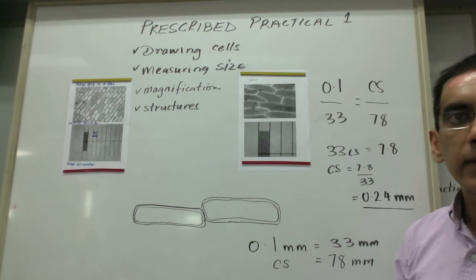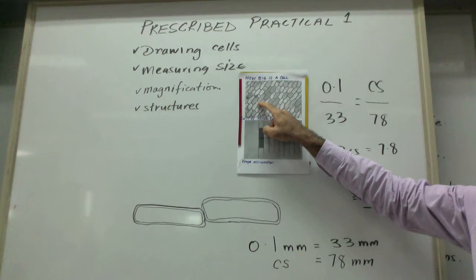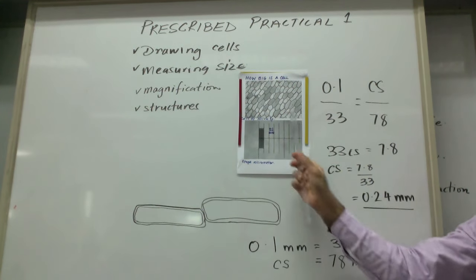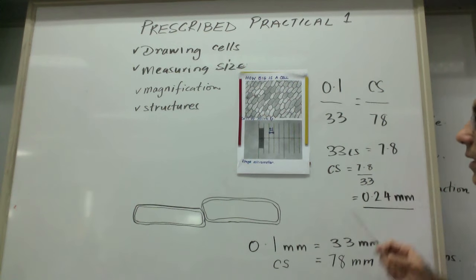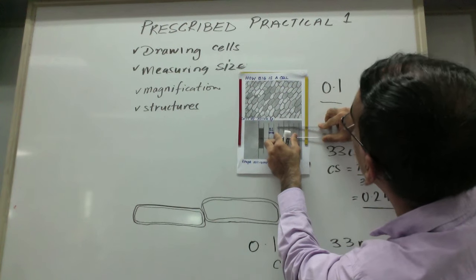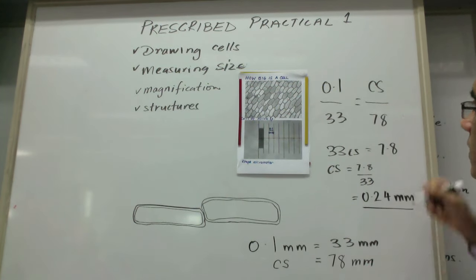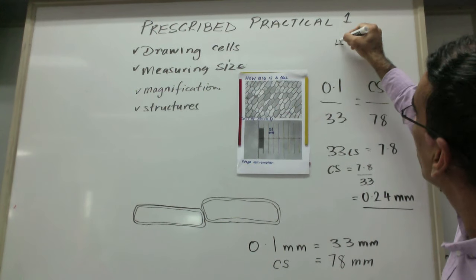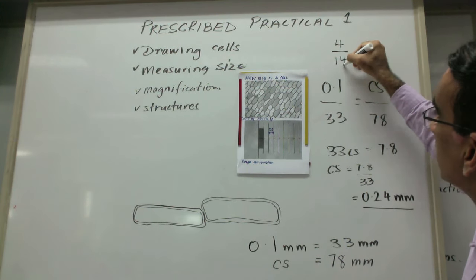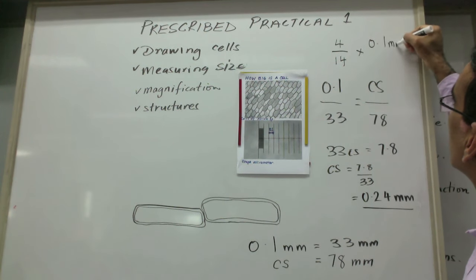So once we know the scale of the diagram, we can then use that to measure various things on it. The nucleus is a little small area here and it's just four millimeters in size, but point one of a millimeter is all of this. Point one of a millimeter is 14.